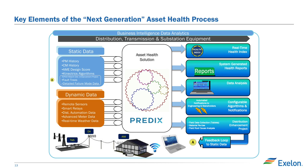This slide on the next generation of the asset health process was built two to three years ago by an engineer. When BIDA came along two years ago, this slide was the first one that came to us — this is what we want. All I did was add the word 'Predix' to it. Everybody knows what we want; we just need a way to do it. The messaging here is: we have all the PM and CM history. We have all the AMI data. How do we pull all of this together — the static data, the dynamic data — and build asset health scores so we can determine asset health in more real time, predict when assets are failing, and move away from preventive maintenance into more risk-based approaches.